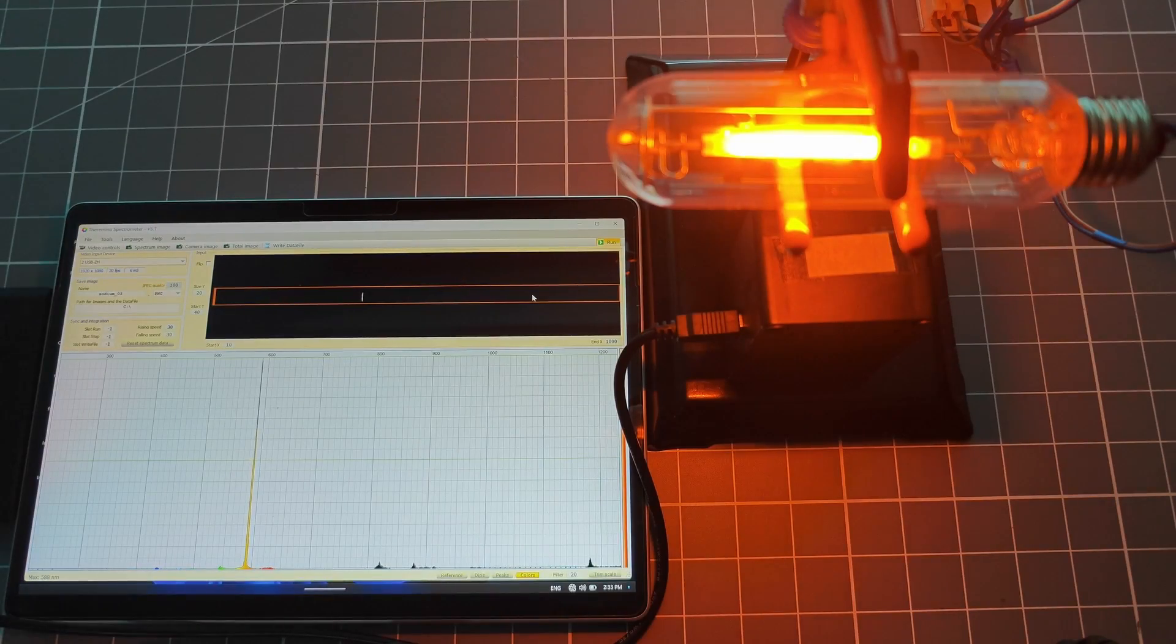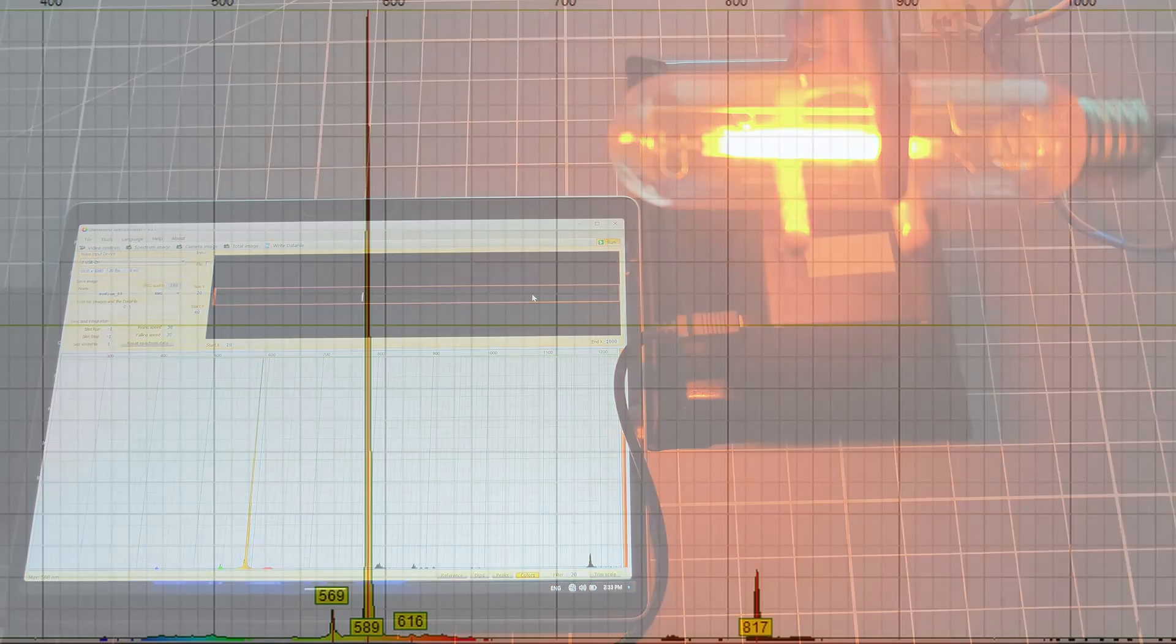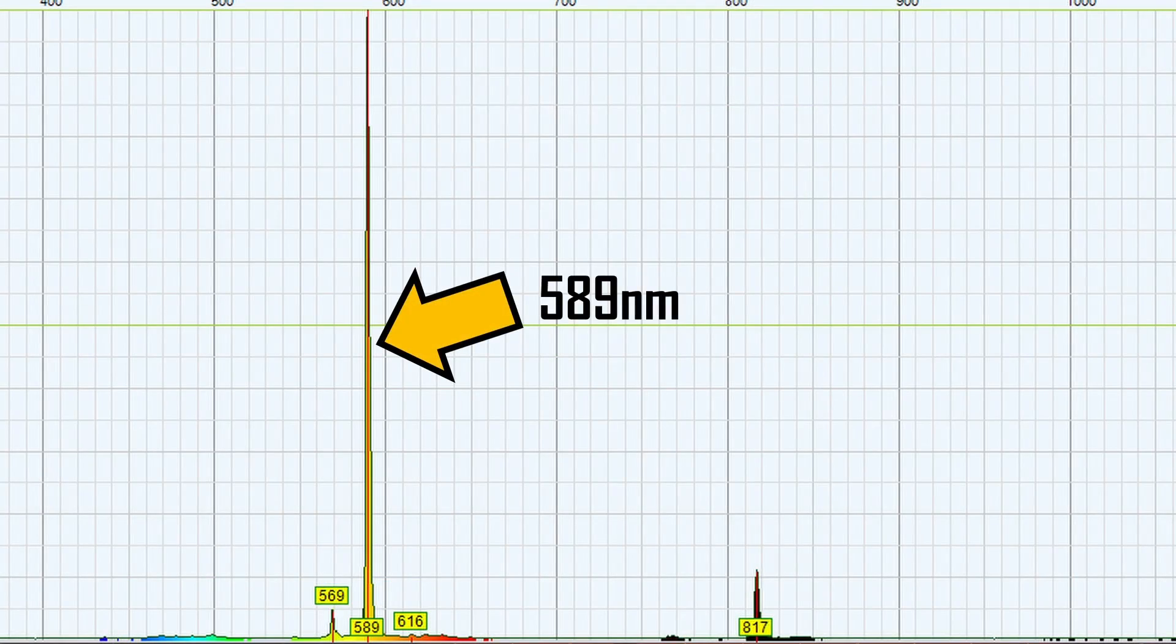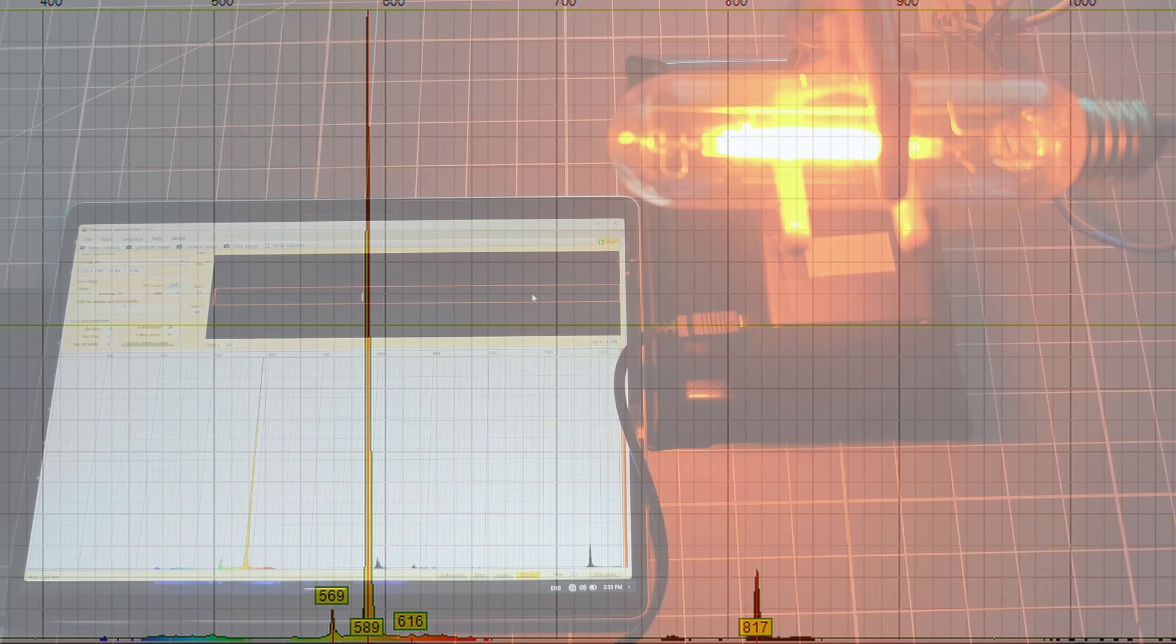This process takes advantage of the very narrow bandwidth emission spectra that is emitted from sodium lamps to create an almost perfect chroma key background color. This technique was revolutionary for its time.